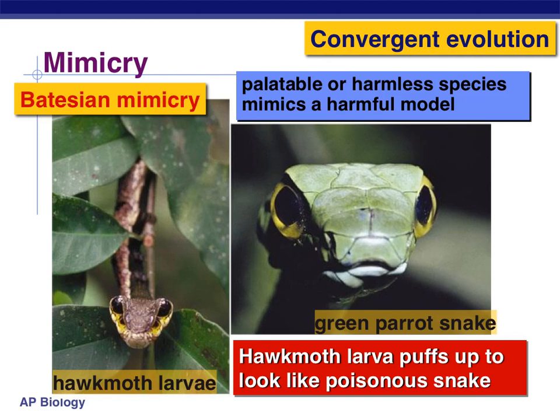Then there's mimicry, and there are two kinds. Batesian mimicry is where a harmless species mimics a harmful species. There's nothing really wrong with you — if a predator ate you, they'd be perfectly fine. But you imitate something that really is poisonous or dangerous to warn predators off. A good example is the hawk moth larva and the green parrot snake. Green parrot snakes are very poisonous and can make a predator really sick, sometimes fatally. Even though the larva is much smaller, there are very distinct similarities between the two. The larva will rear up and puff itself up to look like the snake — normally enough to warn off any bird trying to eat it.